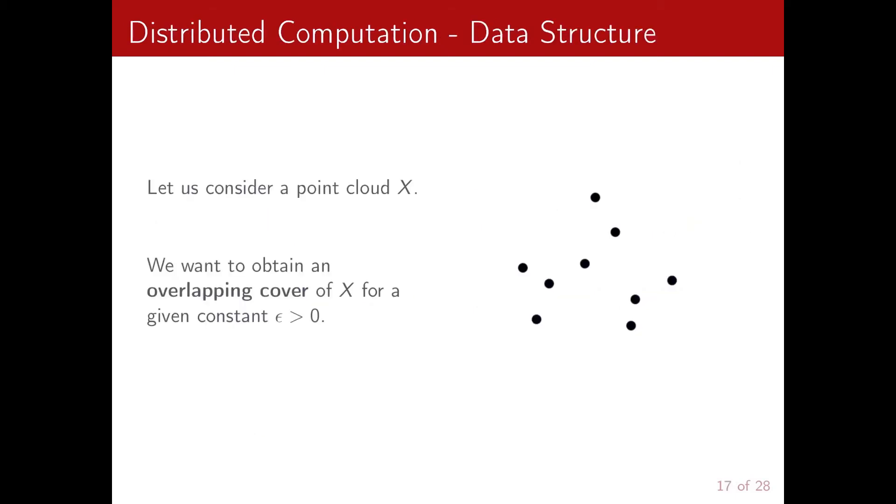And we can do more. We can implement a spatial search data structure to speed up our computations. The reason for this is that at each iteration of our algorithm, we consider a point and we build a local VR epsilon complex around it. So when doing that, we do not need to check all the other points, but we are actually only interested in those that are at distance less than epsilon.